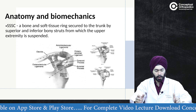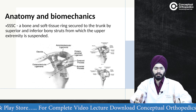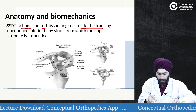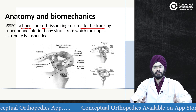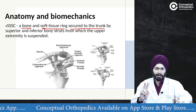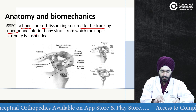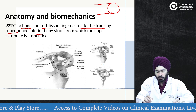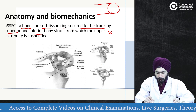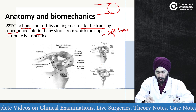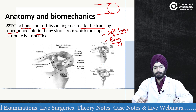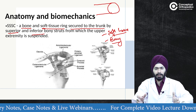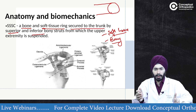The SSSC or Superior Shoulder Suspensory Complex is a bone-plus-soft-tissue ring which is secured to the trunk by superior and inferior struts, from which the upper extremity is suspended. There are three key elements: a superior strut, an inferior strut, and a ring composed of both soft tissue and bony parts.